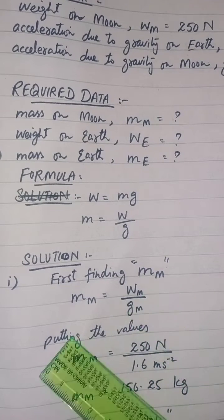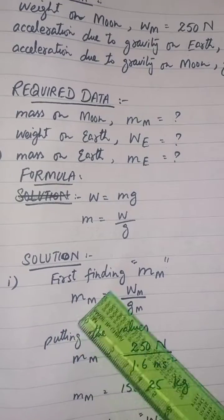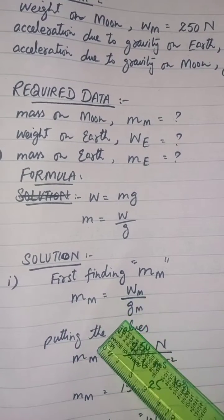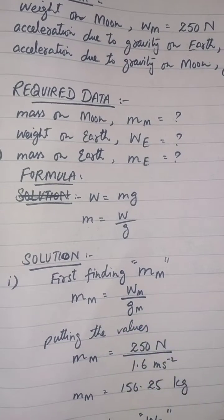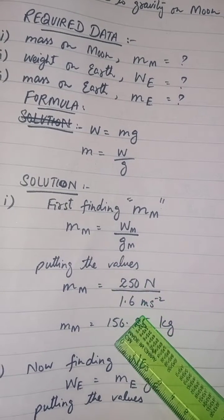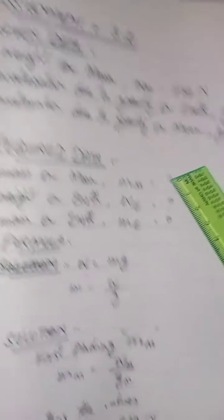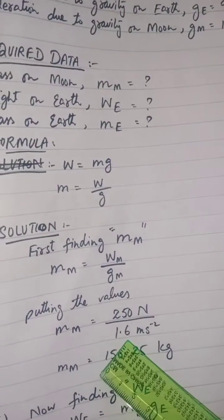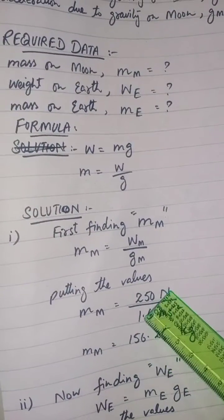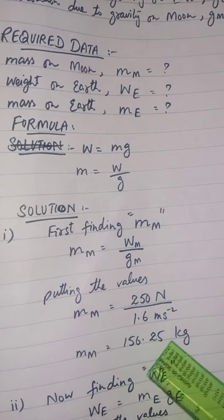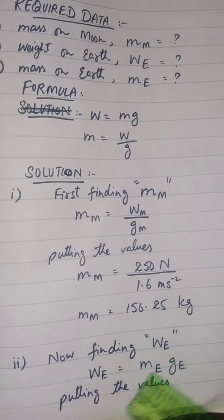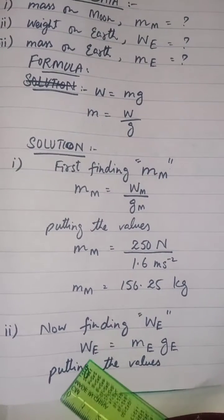For mass on moon: mm equals weight on moon divided by gm. Putting the values: 250 Newton divided by 1.6 m/s² gives 156.25 kilogram. That is the mass on the moon. Now we find the weight on earth.